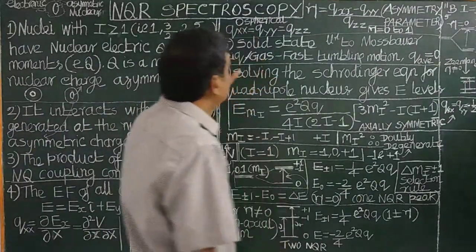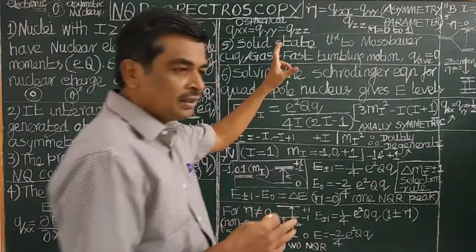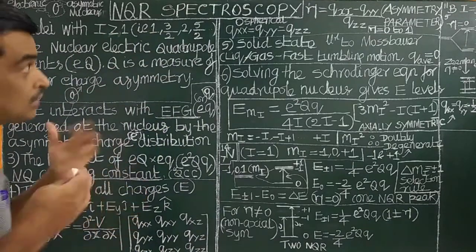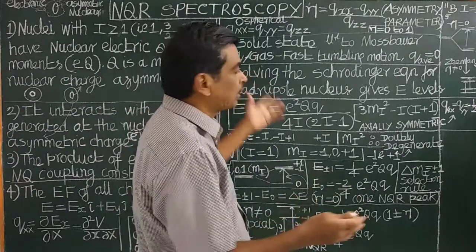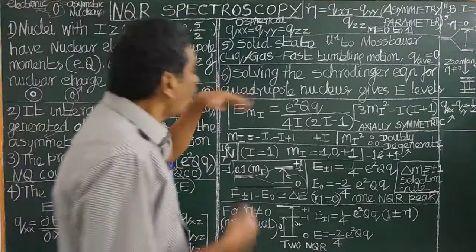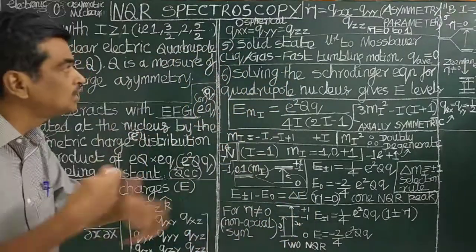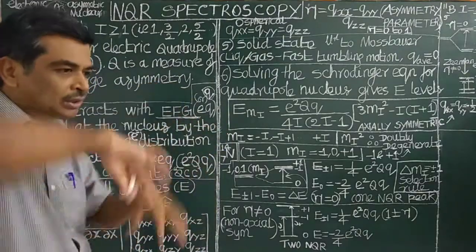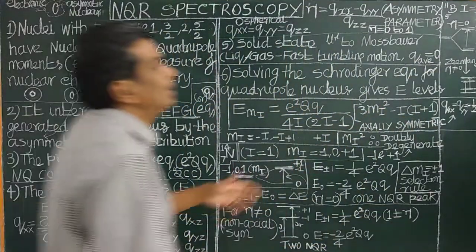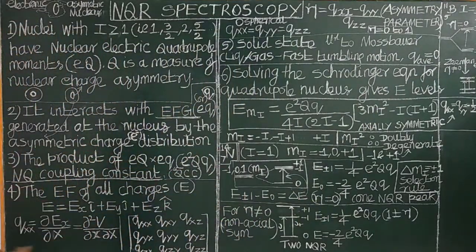NQR spectroscopy is observed only in the solid state, similar to Mössbauer spectroscopy. In liquid and gaseous samples it is not observed, because in those states the molecules undergo fast-tumbling motion. Due to this fast-tumbling motion, the electric field gradient averages to zero.